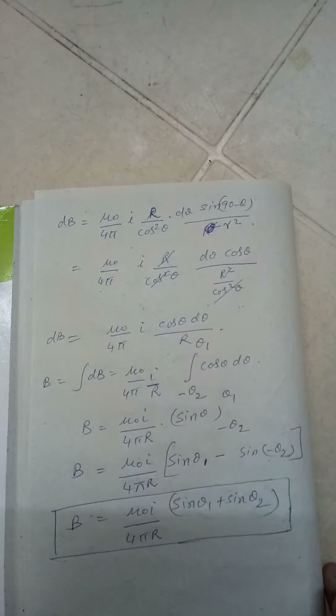The total magnetic induction B is the integration of dB — adding all the small magnetic fields gives the total. Integrating cos theta from minus theta 2 to theta 1 gives sine theta evaluated at the boundaries. This becomes sine(theta 1) minus sine(minus theta 2), and since sine of a negative angle is negative, this becomes plus. The final result is: B equals (mu 0 I) by (4 pi R) times (sine theta 1 plus sine theta 2). Knowing theta 1 and theta 2 and the normal distance R gives the magnetic field.